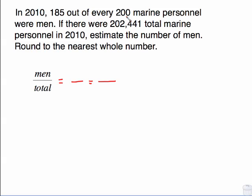185 out of every 200 marine personnel were men. That means that 185 refers to the men. The 200 refers to the total number. Then we've got this total number, and that's going to go on the bottom because that's where our total goes. And what we're looking for is the number of men. That's our x, it goes on the top.